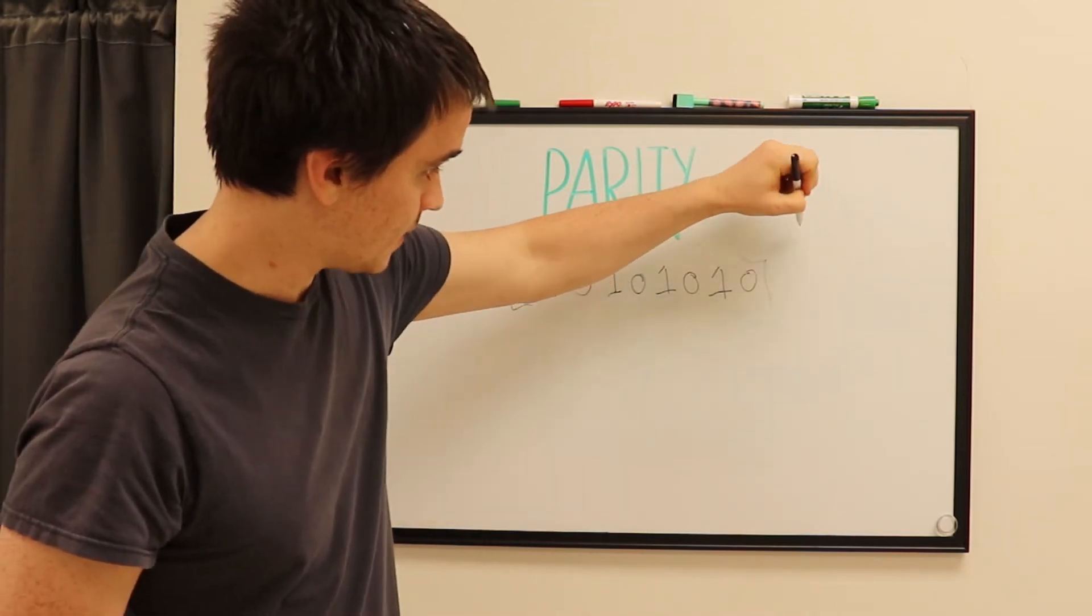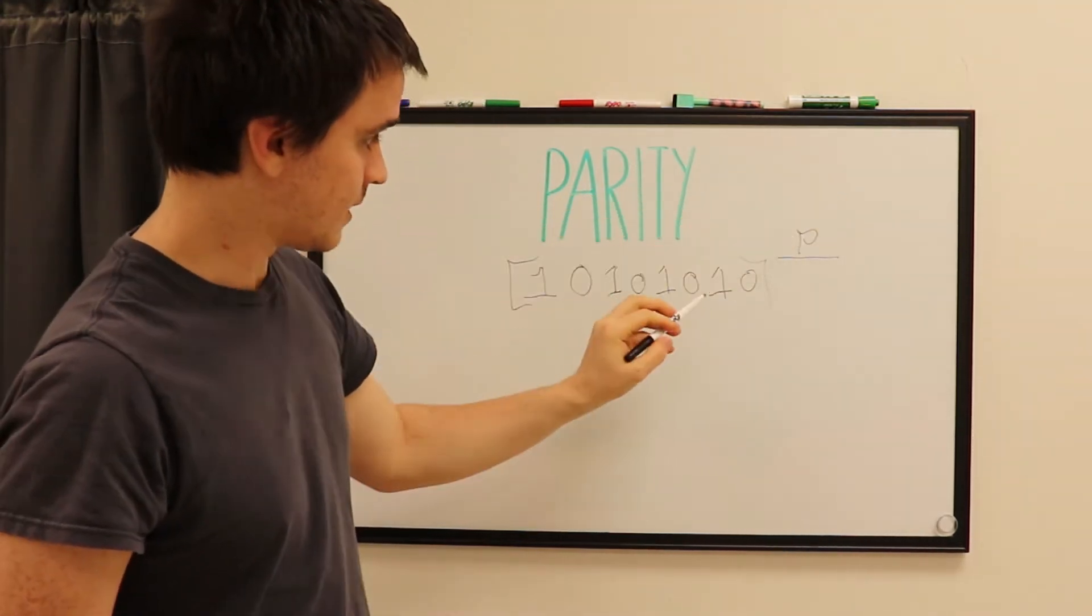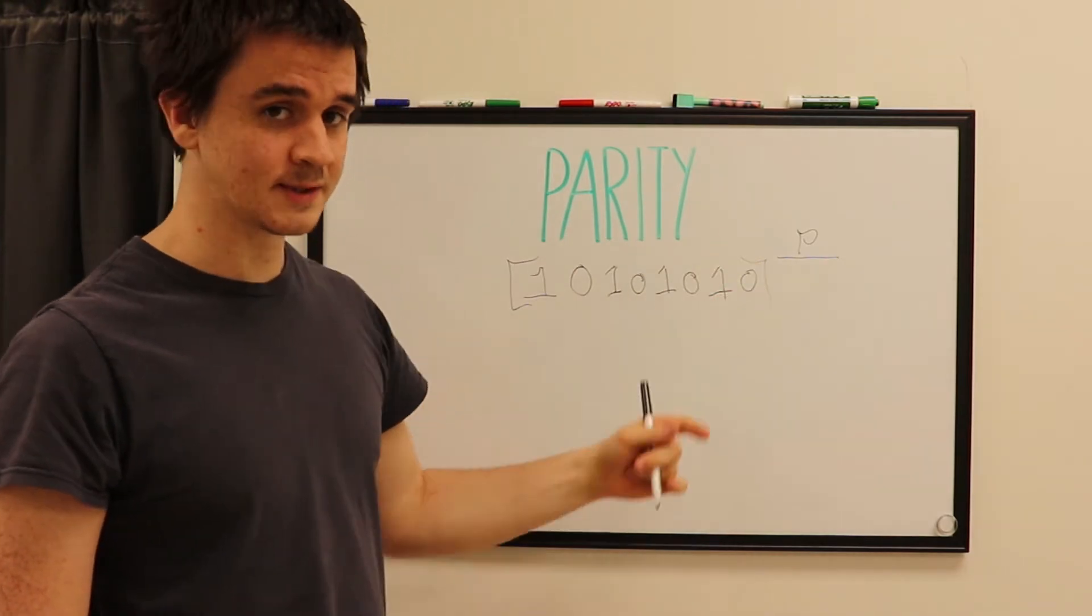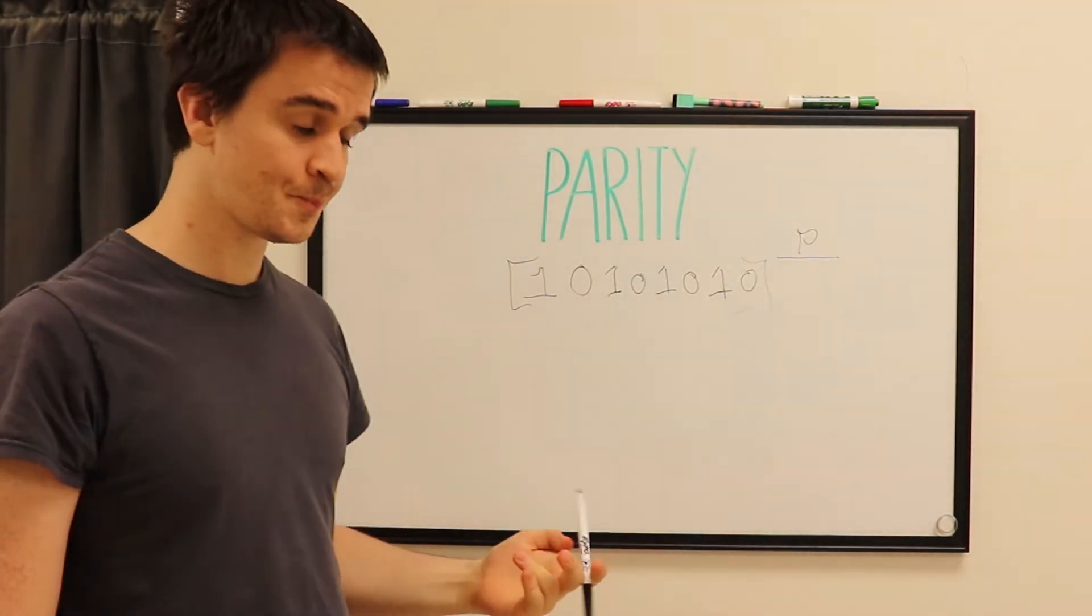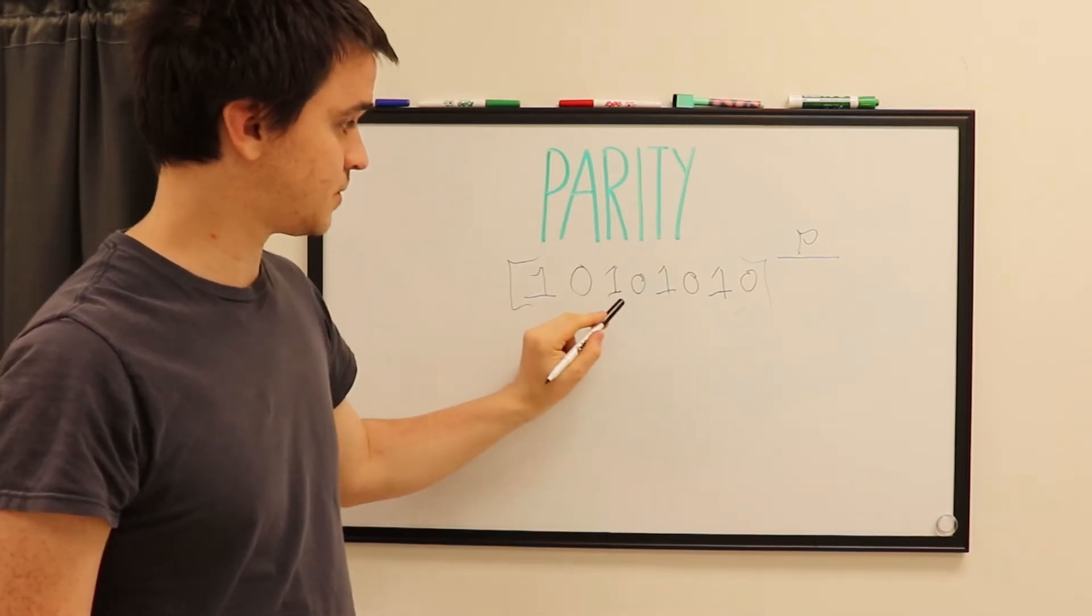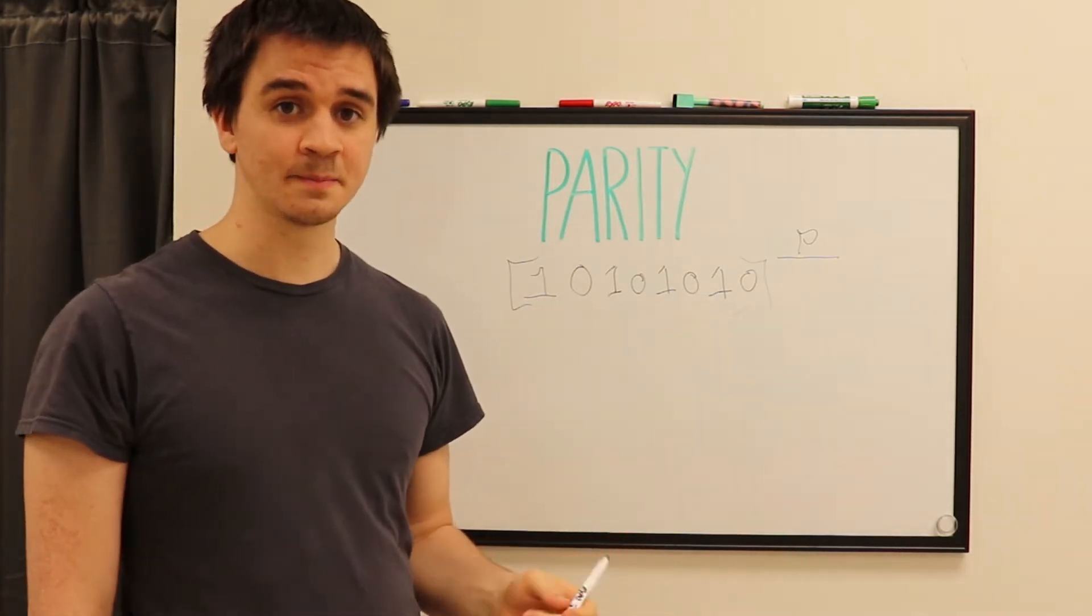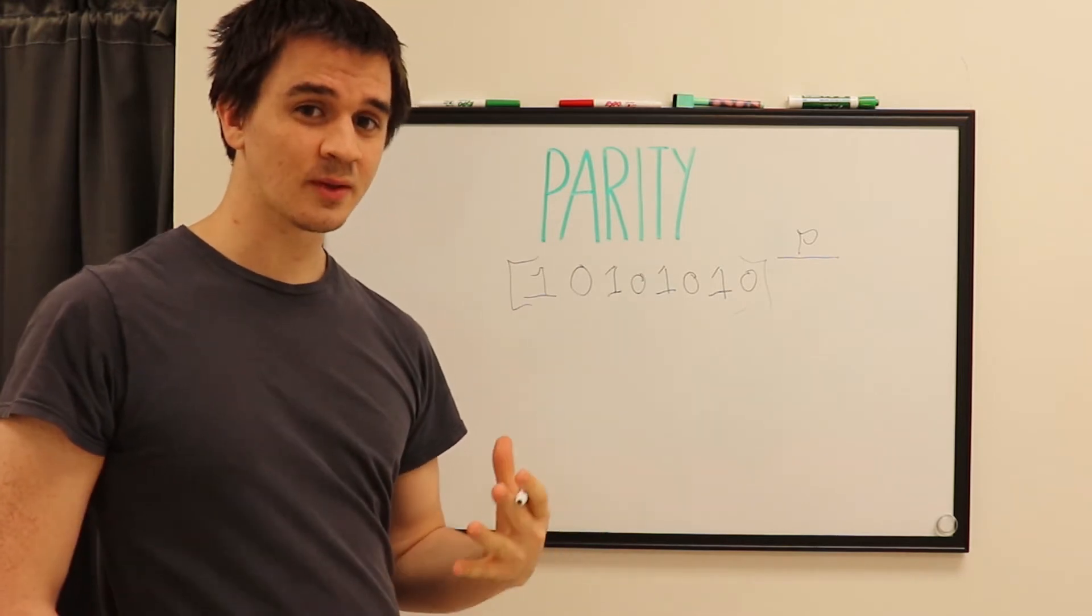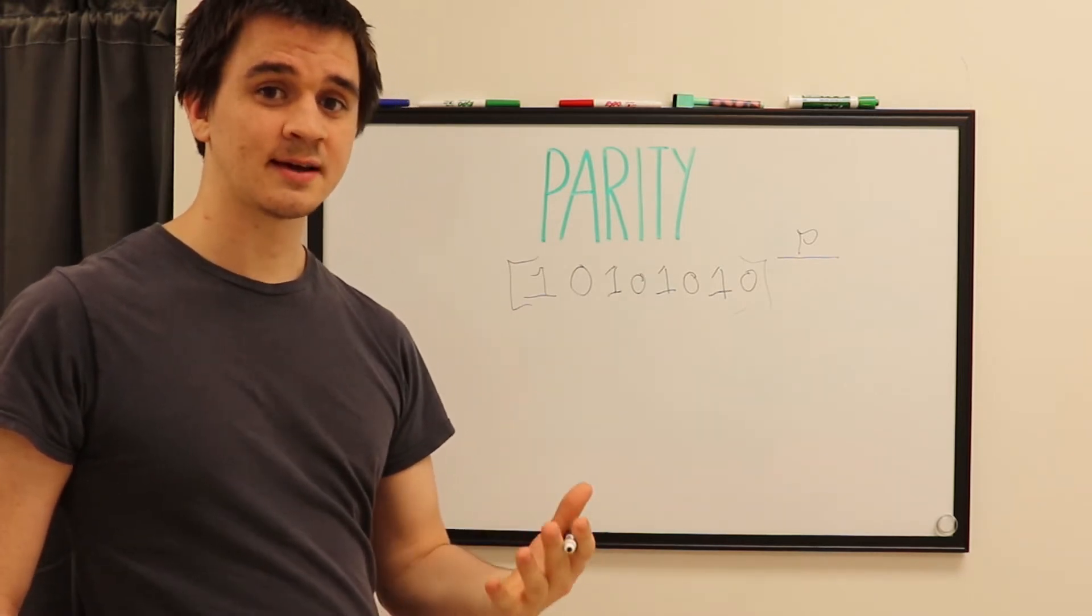And in this byte, we have ones and we have zeros. I'm going to put our parity over here. And this parity is going to be a 1 or a 0. And let's figure out how. We're going to count how many 1's are in this. So, 1, 2, 3, 4. That's even.